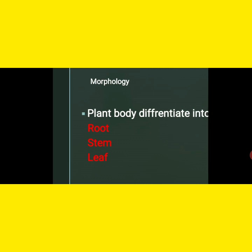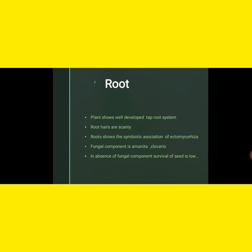Next is the morphology, which is nothing but external characters. From early schooling we learn about plant parts — root, stem, and leaf — which are the important vegetative parts of a plant. Roots perform absorption of nutrients and water. The stem performs a supportive or mechanical function. The leaf performs photosynthesis or food production. The roots are taproot type and scanty in nature. They show a symbiotic association — two partners come close to each other and make a partnership beneficial to both.